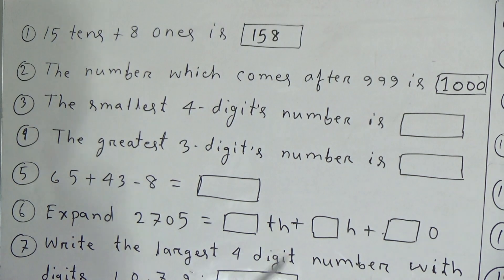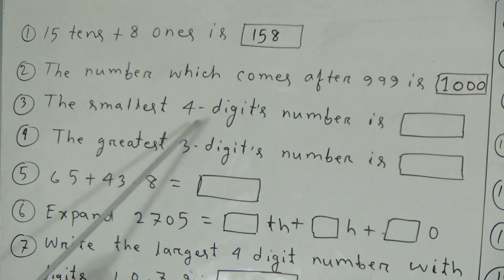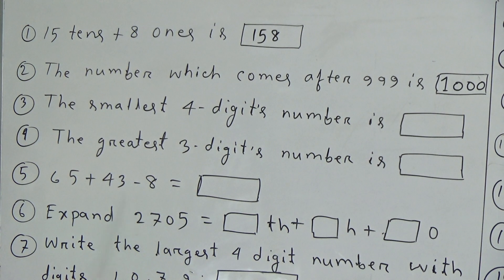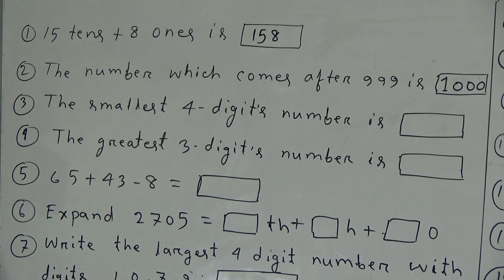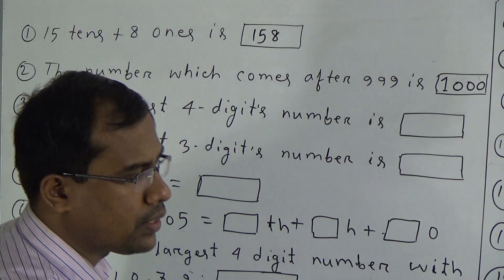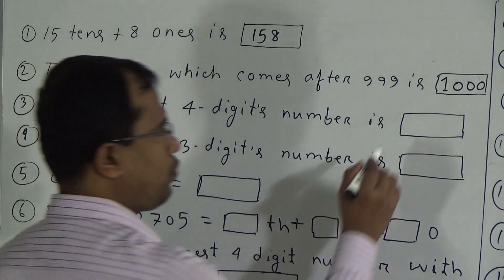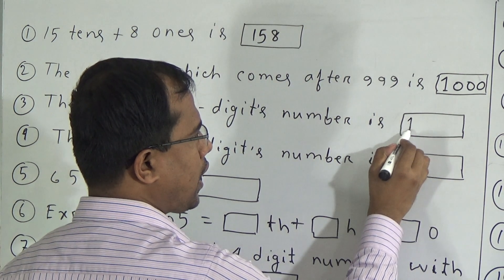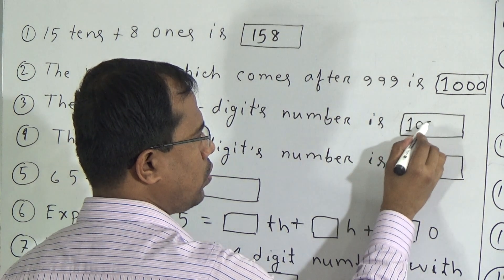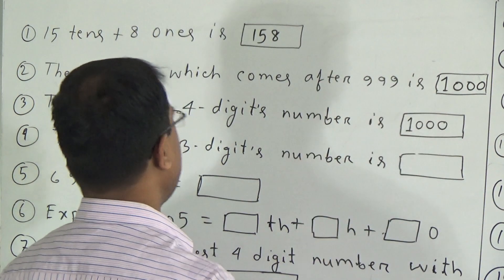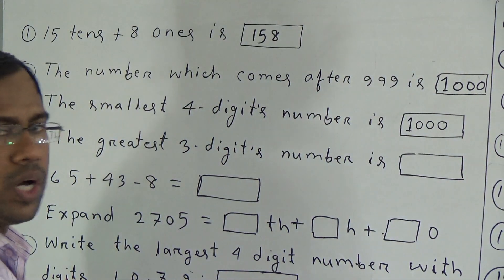Third question: the smallest 4-digit number. In the highest place, we have to put the smallest significant digit, and in other places we put 0. We know that 1 is the smallest significant digit. So in the highest place — that means in the 1000s place — we put 1, and in other places we put 0, 0, and 0. That means the smallest 4-digit number is 1000.